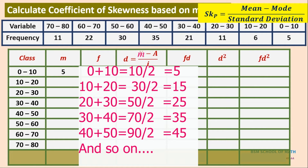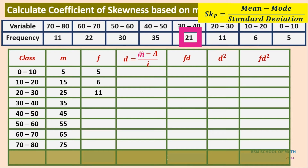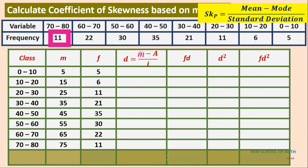The mid-values are: 5, 15, 25, 35, 45, 55, 65, 75. The corresponding frequencies are: 5, 6, 11, 21, 35, 30, 22, 11.